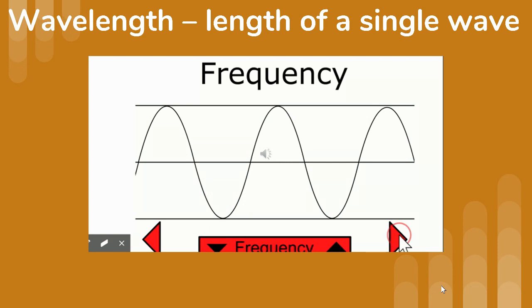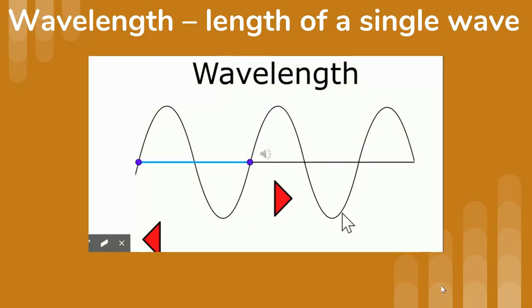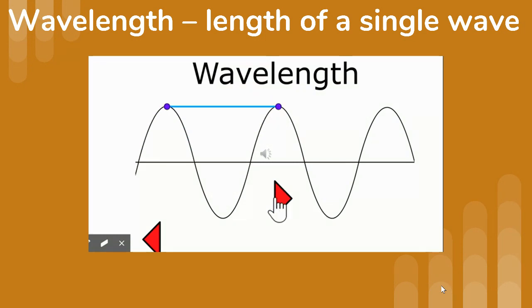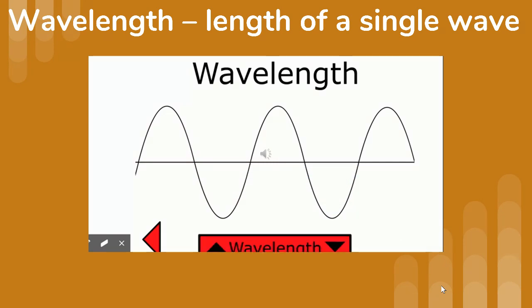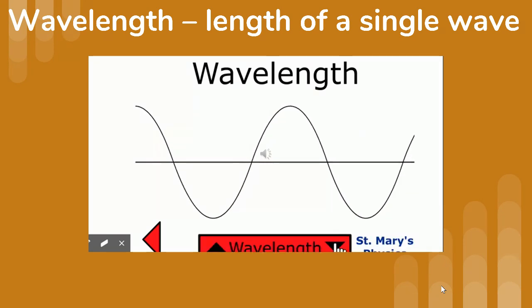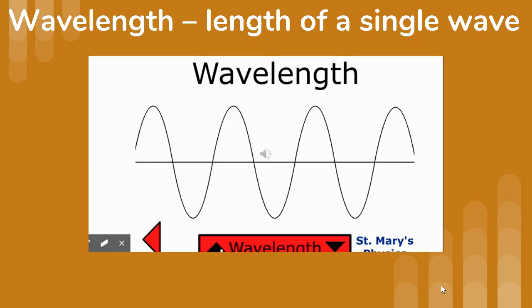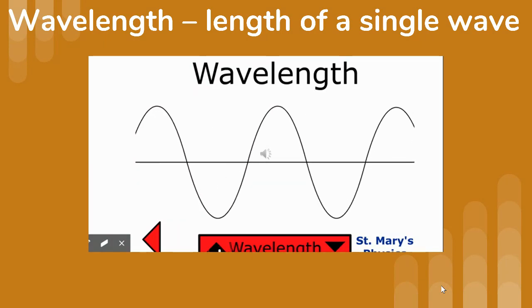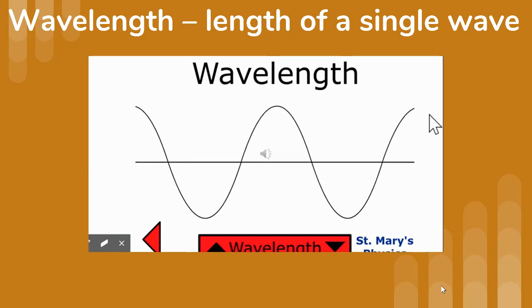The length of a single wave in a wave train is called the wavelength. There are many ways to measure wavelength: you can measure the length of one cycle, the distance between consecutive crests, or the distance between consecutive troughs. The troughs are the low points in a wave.